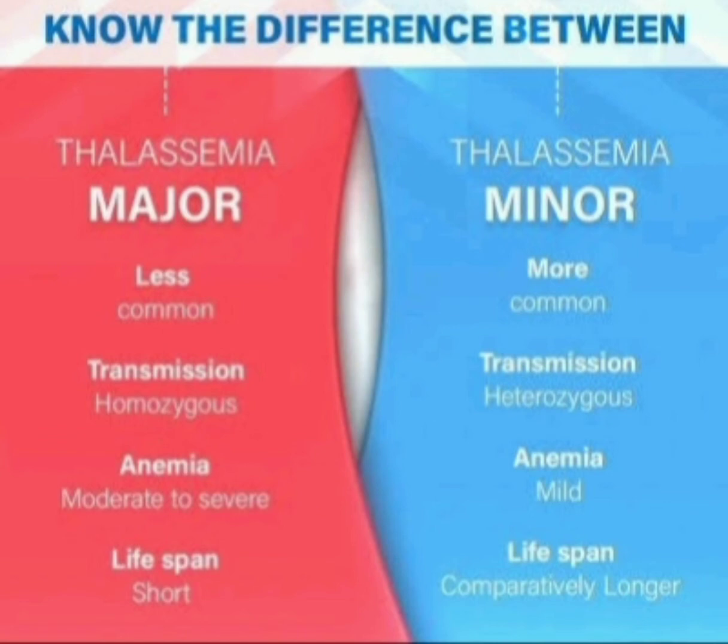In thalassemia major, anemia is moderate to severe, where in thalassemia minor anemia is mild. In thalassemia major, lifespan is short, where thalassemia minor lifespan is comparatively longer. This is the difference between thalassemia major and minor.